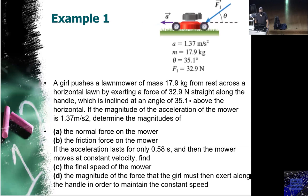Let's start with this example. A girl pushes a lawnmower of mass 17.9 kilograms from rest across a horizontal lawn by exerting a force of 32.9 Newtons straight along the handle, which is inclined at 35.1 degrees above the horizontal. If the magnitude of the acceleration is 1.37 m/s², determine the normal force, the friction, the final speed if the acceleration lasts 0.58 seconds, and the force to maintain constant speed.